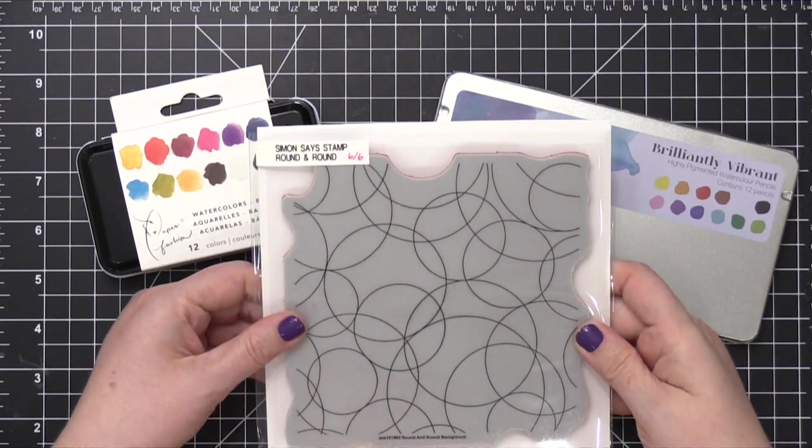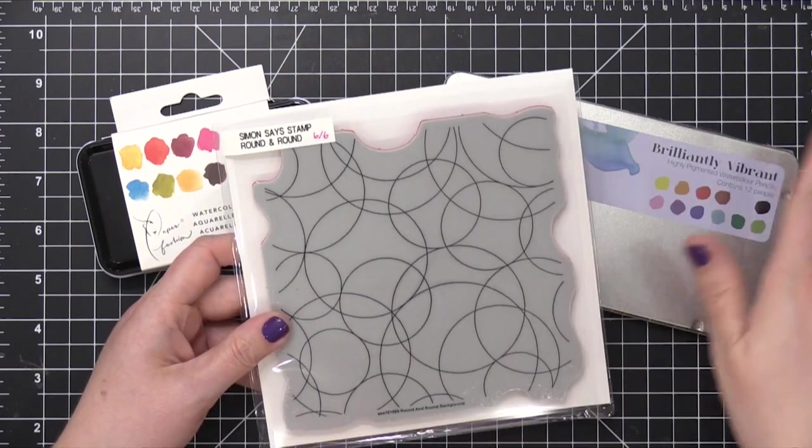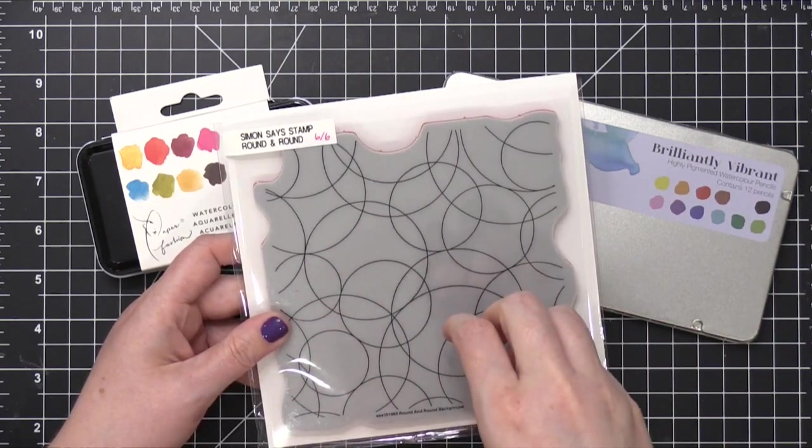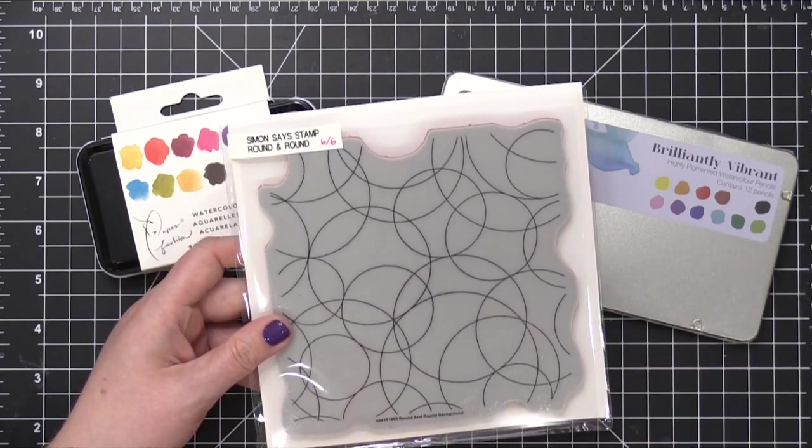And to make the watercoloring super fun, I'm going to use the Round and Round Background Stamp from Simon Says Stamp. So I'm going to stamp this in VersaMark and heat emboss it with white embossing powder.